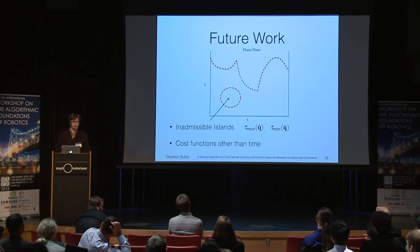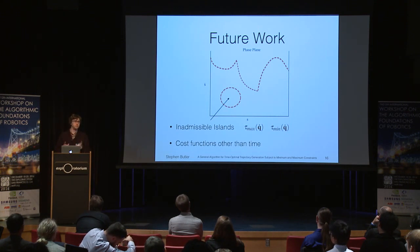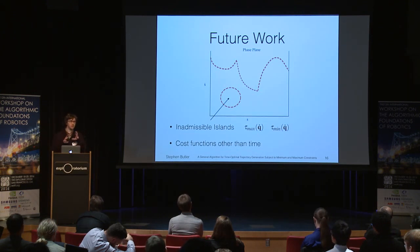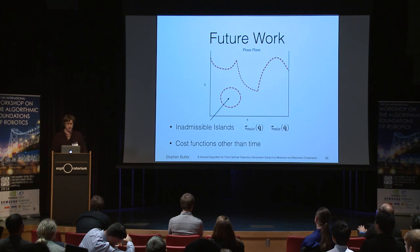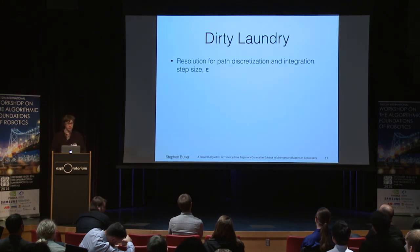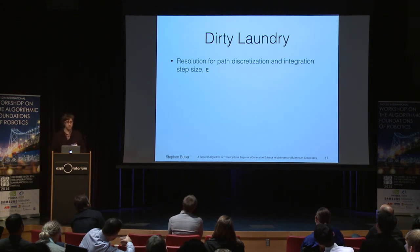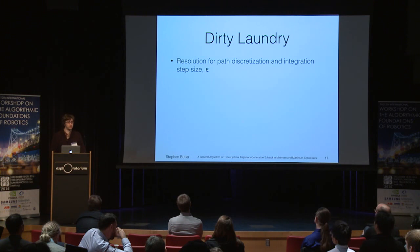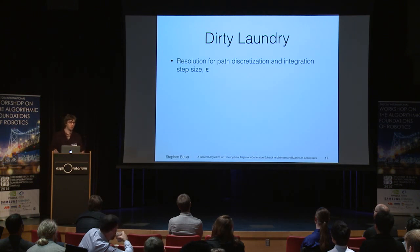For future work: all of the constraint curves described previously form upper and lower bounds, but there are constraints that form inadmissible islands within the phase plane — for example, when torque is a function of velocity, we generate these bubbles. There needs to be an extension to the algorithm to handle this, and we believe we can do that with the continuity graph. Additionally, cost functions other than time — we'd obviously like to evaluate things like energy or work. As for limitations, it's a resolution complete algorithm; the only toggle users have is epsilon, a discrete step size for path discretization and integration — although even for very long, finely discretized paths, we still achieve very good computation time.